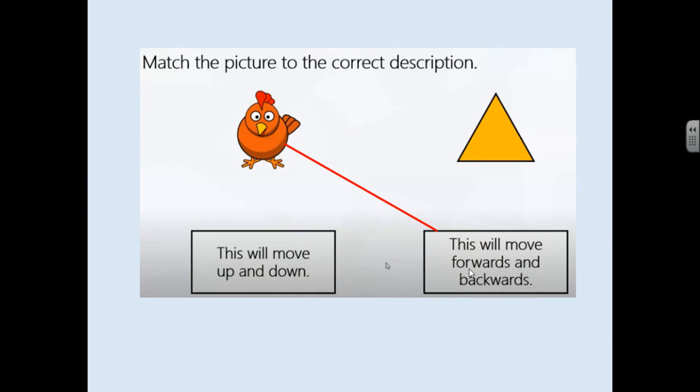Let's see if you got it right. So the chicken, this will move forwards and backwards. The triangle will move up and down.